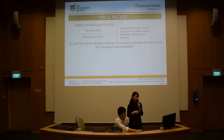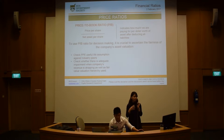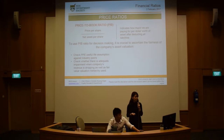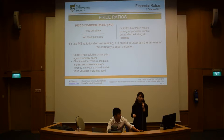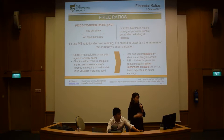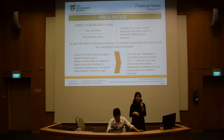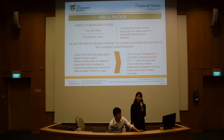To use the PB ratio in decision making, it is crucial to ascertain the fairness of the company's asset valuation. First, you check the PPE — plant, property and equipment — useful life assumption against industry peers. Next, you check whether there is adequate impairment when a company's revenue is dropping, as well as the fair value valuation currently used. Alternatively, one can use price over tangible book value, which eliminates intangible assets. When a PB ratio is less than 1, it indicates further depreciation of assets will occur, which signals a lower expectation of future earnings.